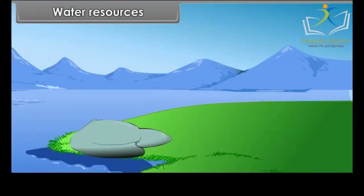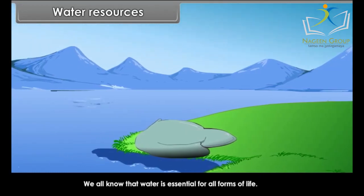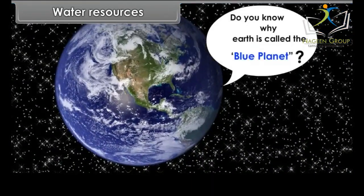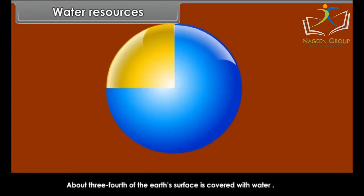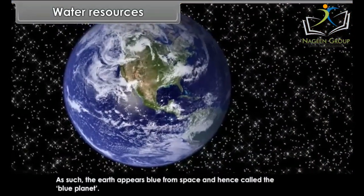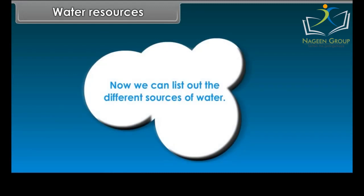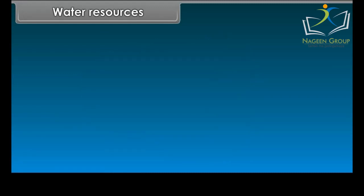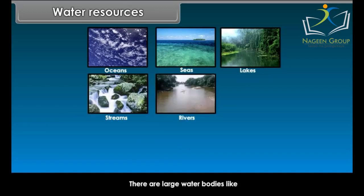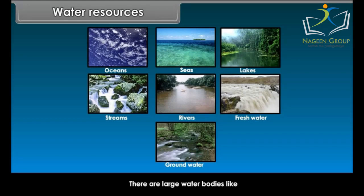Water Resources: Water is essential for all forms of life. About three-fourths (71%) of the earth's surface is covered with water, so the earth appears blue from space and is called the blue planet. Sources of water include large water bodies like oceans, seas, lakes, streams, rivers, freshwater, groundwater, etc.